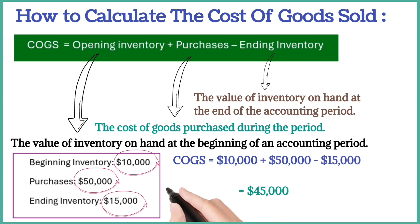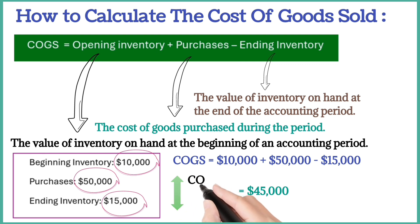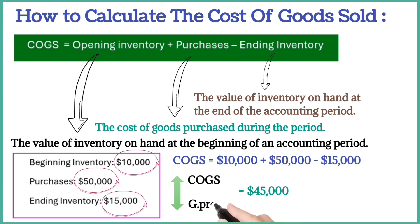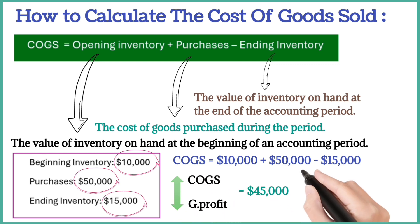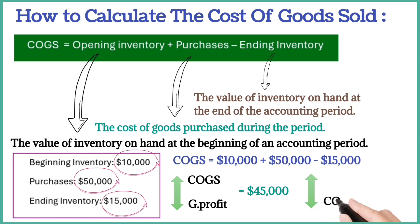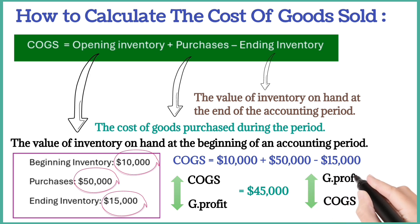The cost of goods sold directly impacts a company's gross profit. A higher cost of goods sold reduces the gross profit, while a lower cost of goods sold increases gross profit.